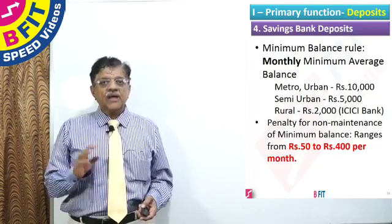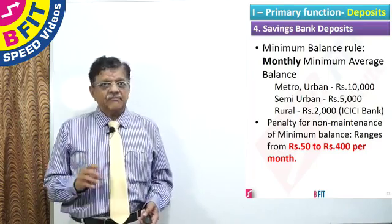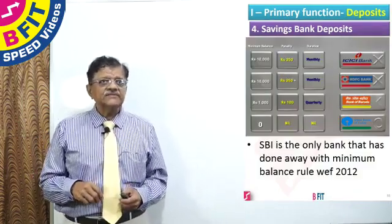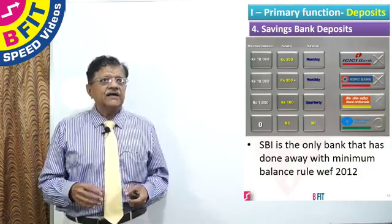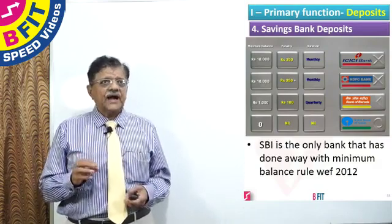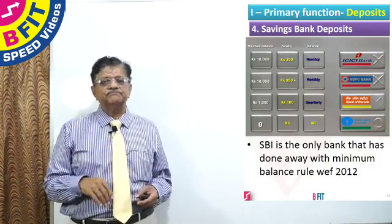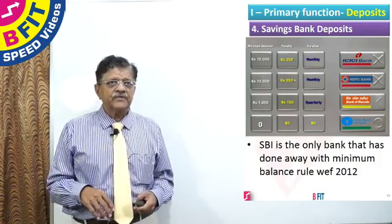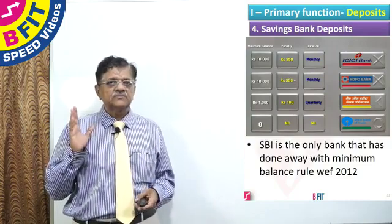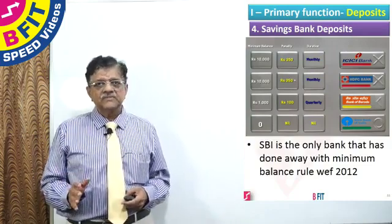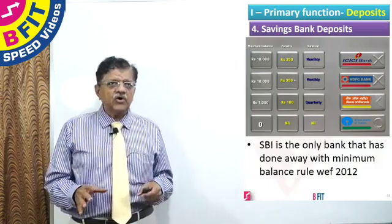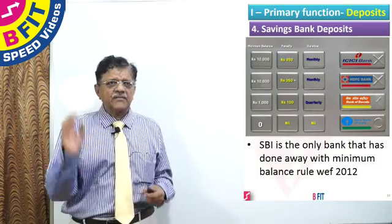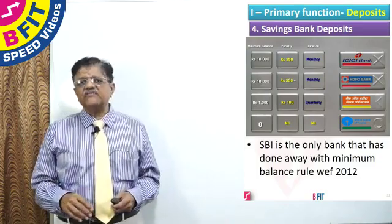You must keep above the monthly average balance, otherwise the penalty will be very high. Here are the penalty charges for a few banks: ICICI Bank in an urban area has a minimum balance of 10,000 rupees and a penalty of 350 rupees per month. HDFC Bank — same, 10,000 rupees minimum and 350 rupees penalty. Bank of Baroda has a minimum balance of 1,000 rupees and a penalty of 100 rupees. State Bank of India has a minimum balance of 0 and there is no penalty. State Bank of India is the only commercial bank that has done away with the minimum balance stipulation, with effect from 2012.